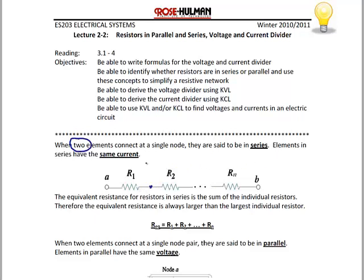Because elements that are in series have the same current, the current flows from R1 to R2. If I added a third resistor at the same node, that would not be true and they would not be in series. So conversely, same current means series, or two elements meeting at a node means they are in series.